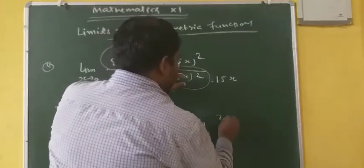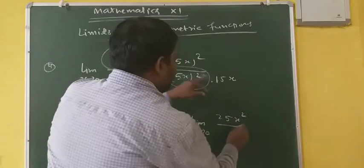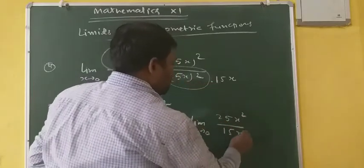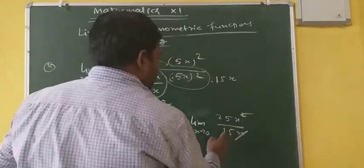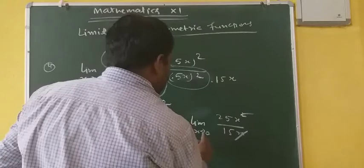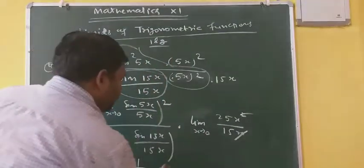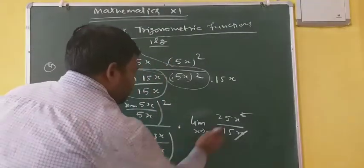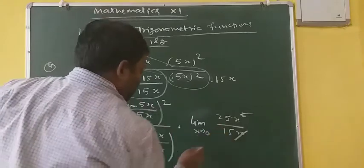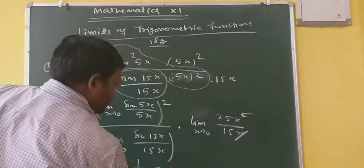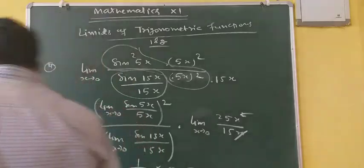So we have 25x² upon 15x. What remains is that putting x = 0, the answer is 0.